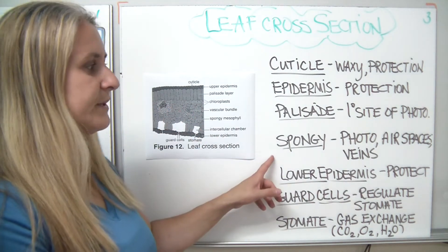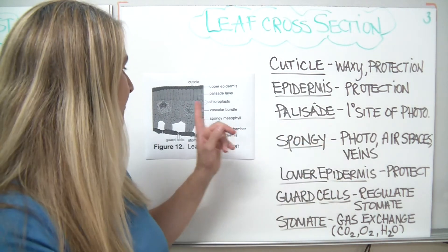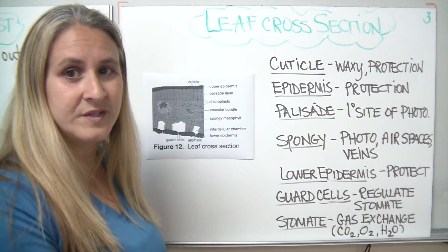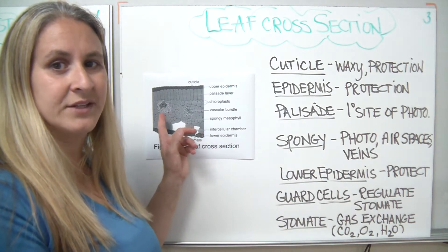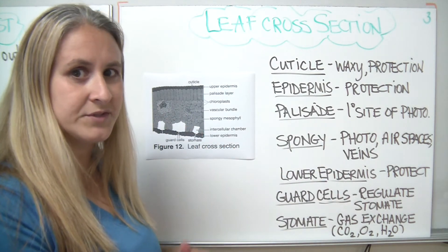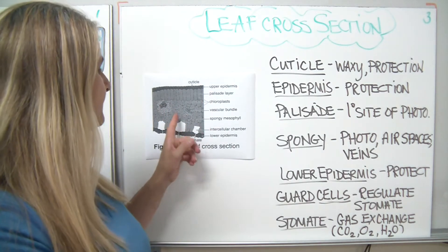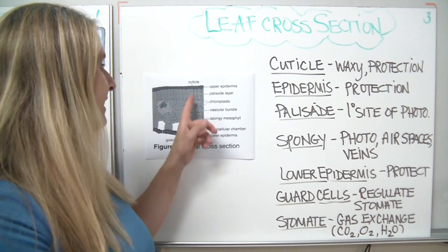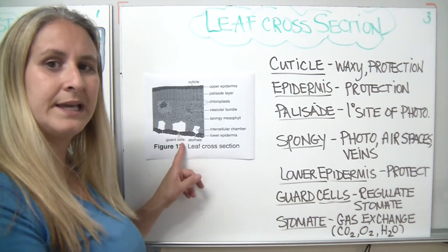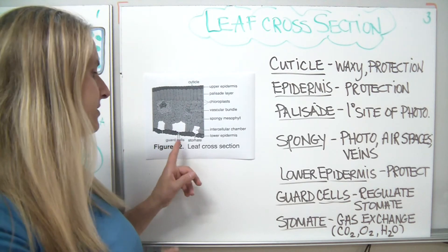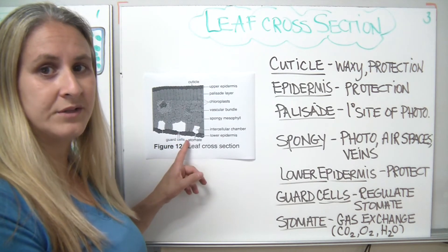The layer underneath the palisade is called the spongy layer. The spongy layer has several functions: it carries out photosynthesis because it has some photosynthetic cells, it contains air spaces, and it also contains the veins — sometimes called vascular bundles. If you look at the spongy layer, it's connected to the palisade layer, and it has these air spaces that are conveniently placed right next to cells in the lower epidermis called the guard cells and the stomates.